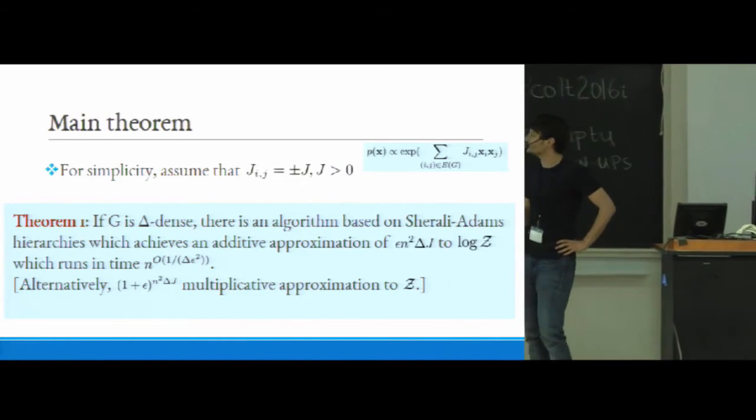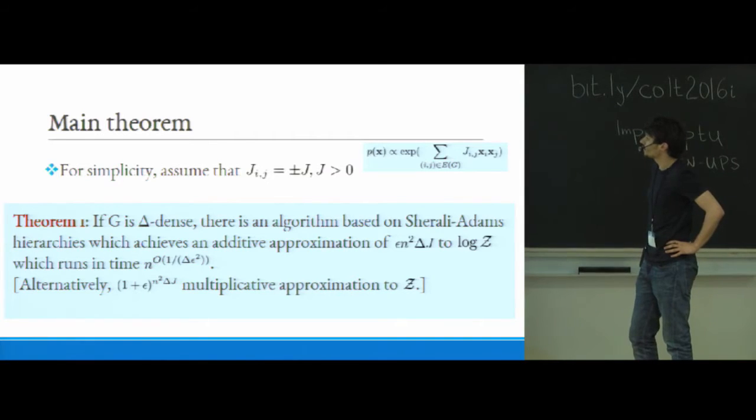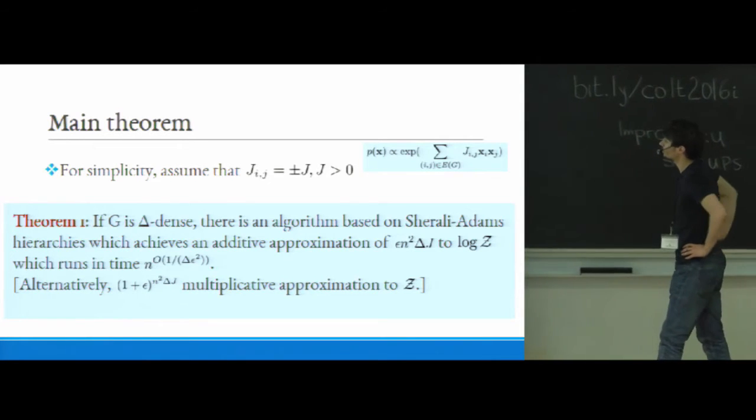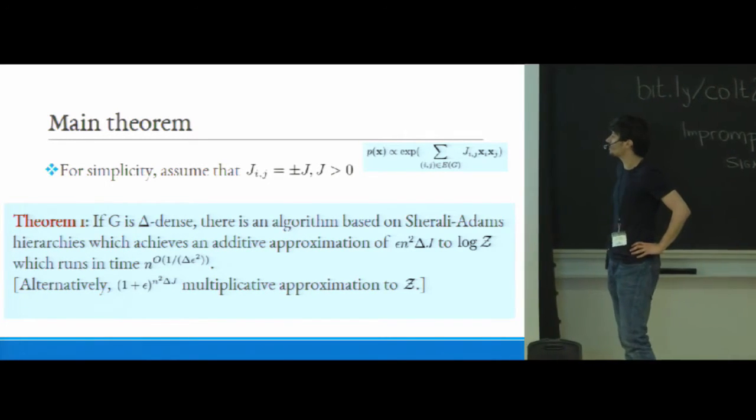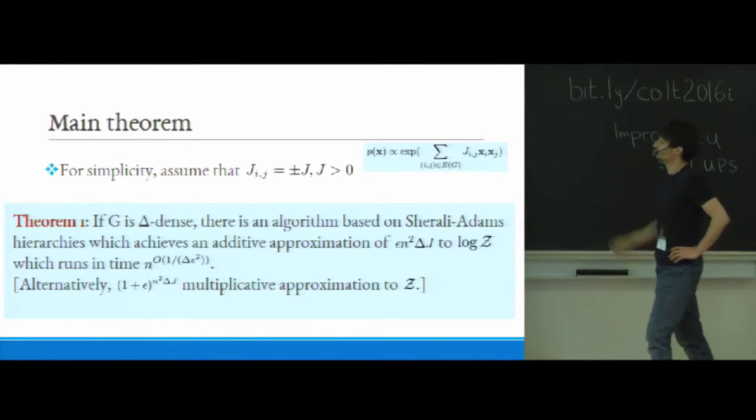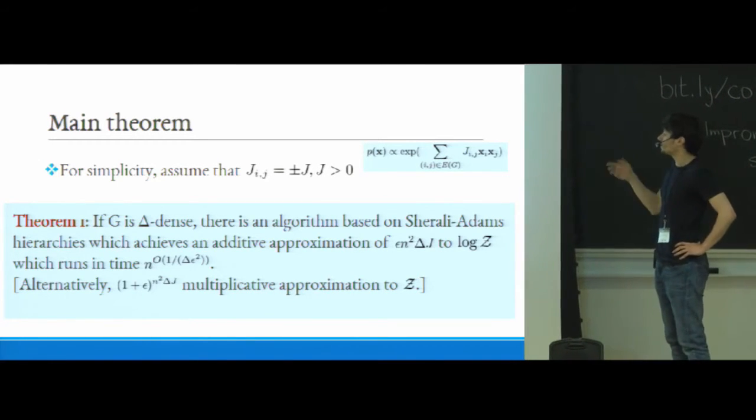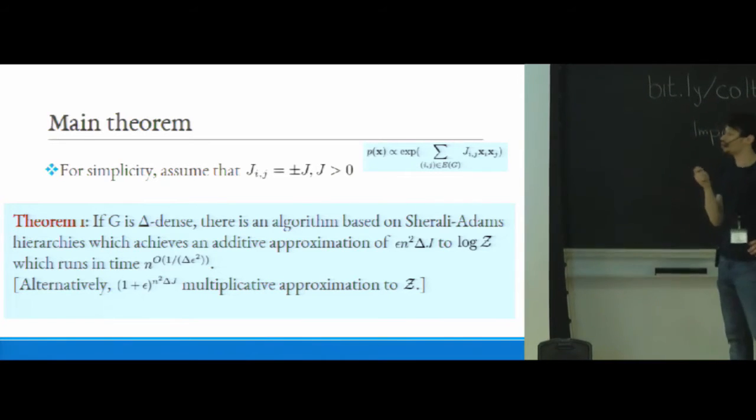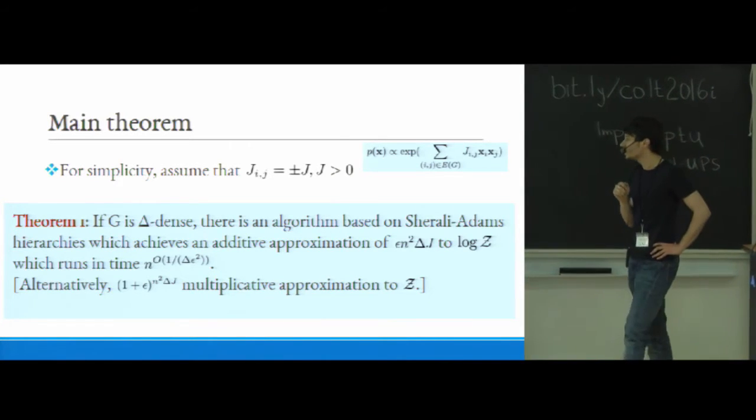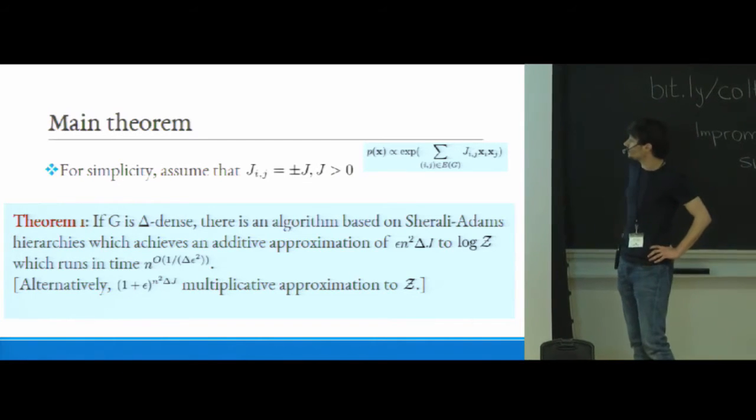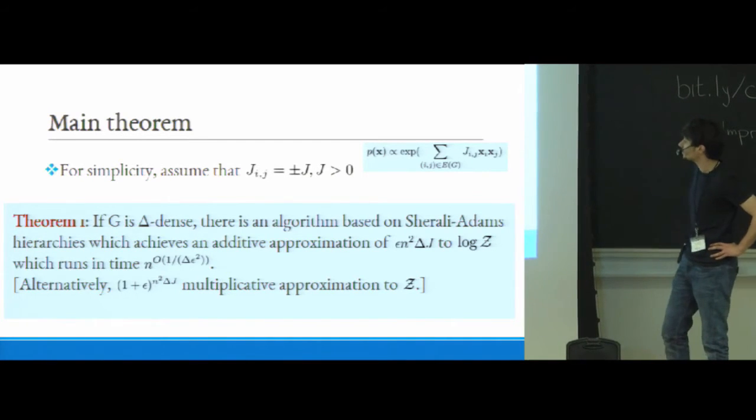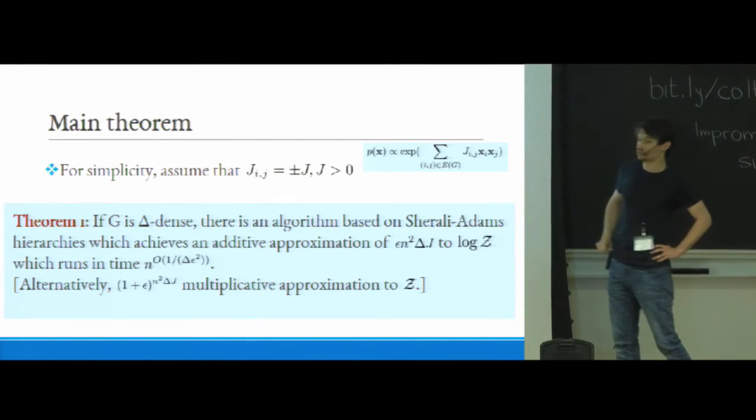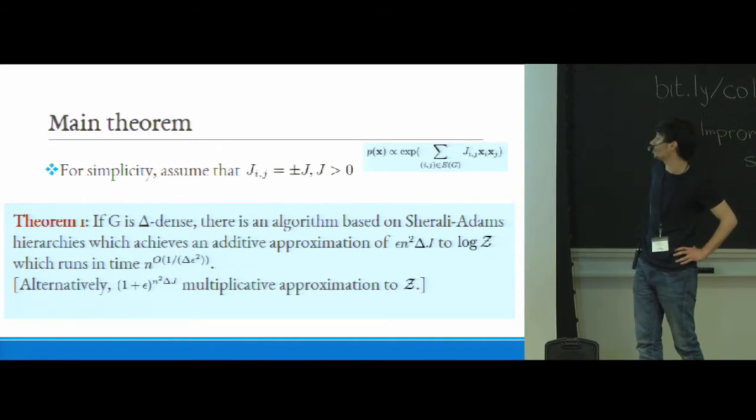So to have something concrete to talk about, let me tell you one theorem which you could prove using these methods. So let's for simplicity assume, so I'm still flashing basically the form of the Ising model distribution on the right there, and let's just for simplicity assume that all of the potentials are either ±J for some fixed J, which you can think of as some scale parameter. And then the theorem statement is the following. Suppose that the graph which specifies the Ising model is δ-dense. So δ-dense means that each of the nodes in the graph has at least δ times n neighbors. Then the claim is that there is an algorithm which is based on one particular type of convex programming hierarchies called the Sherali-Adams hierarchies, which can get you an approximation of ε times n² times δ times J to log of the partition function, and which runs in time n to the roughly 1 over δε².